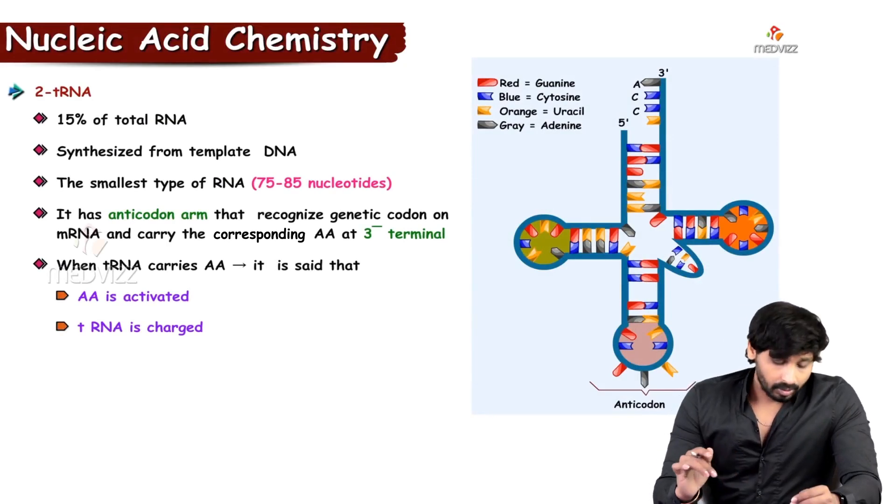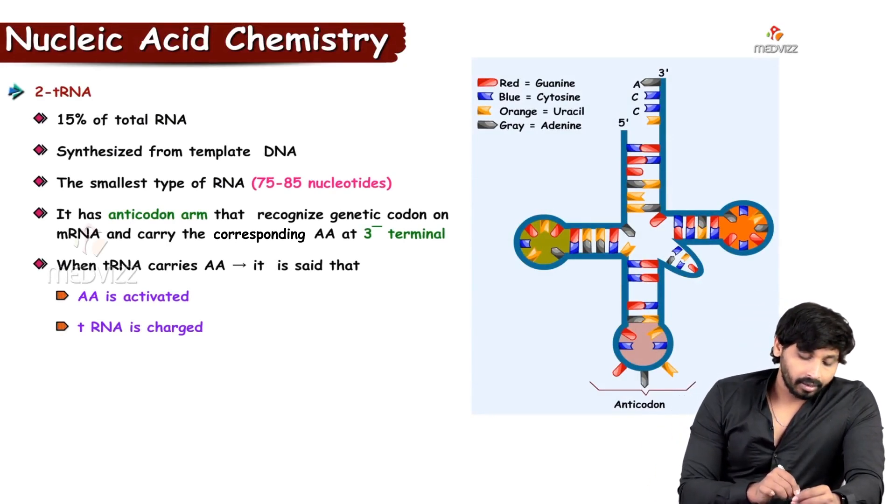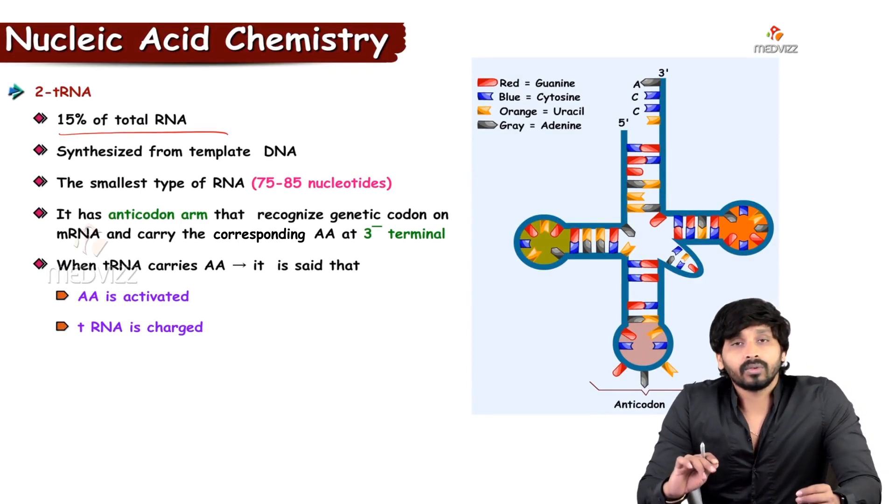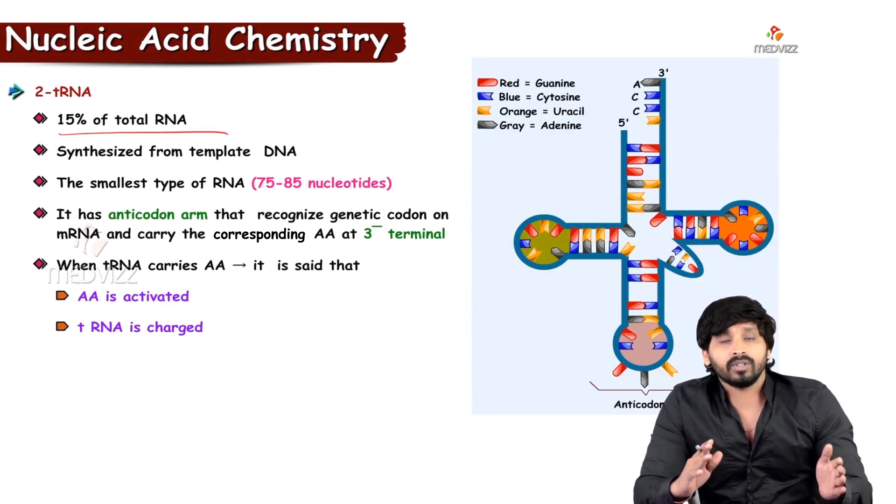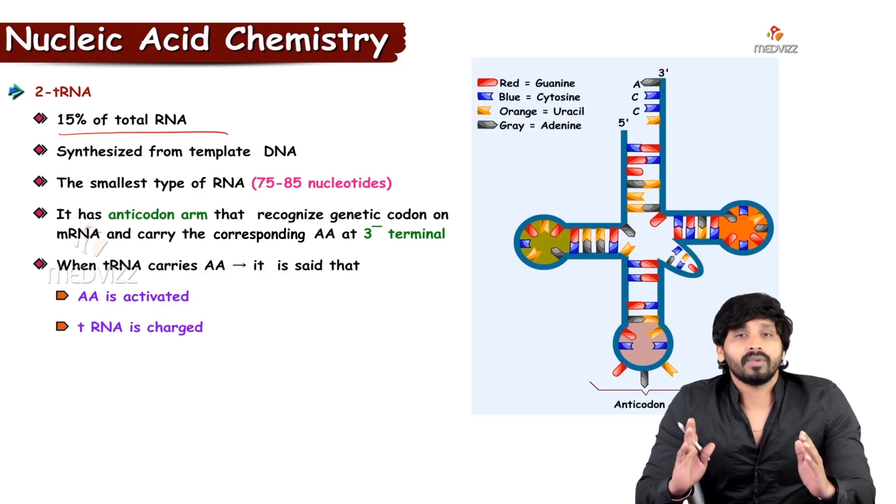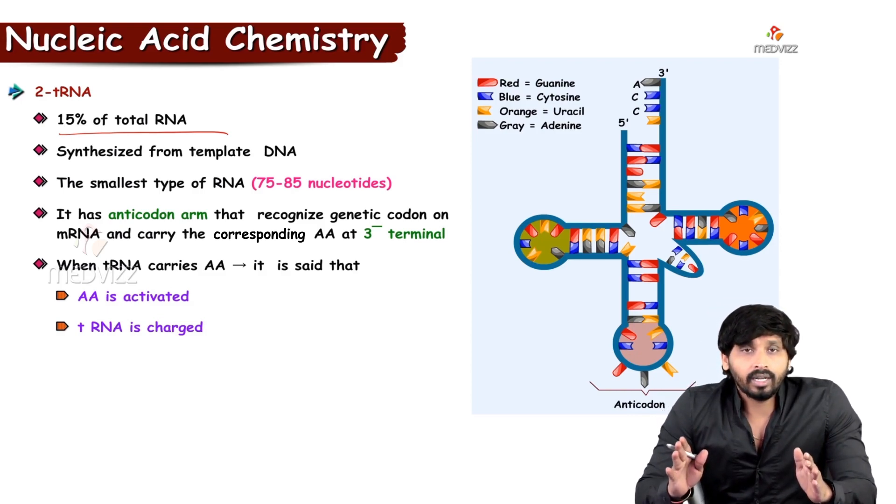tRNA, coming to the structure, accounts for 15% of total cellular RNA. mRNA counts 5%, tRNA counts 15% of total RNA.